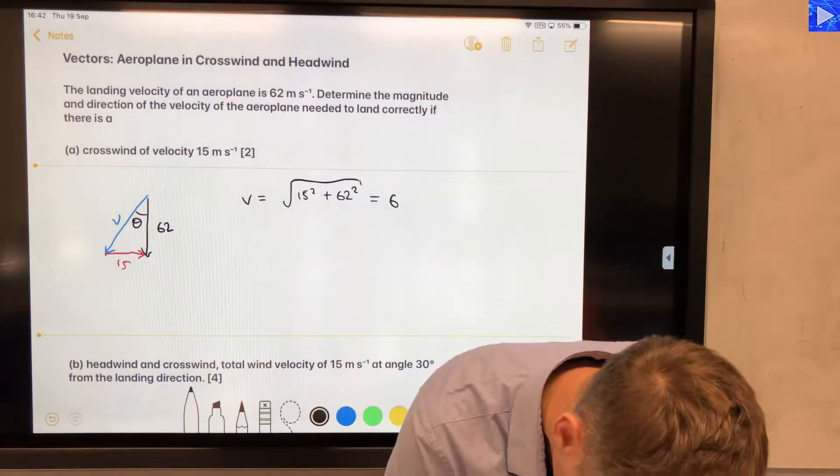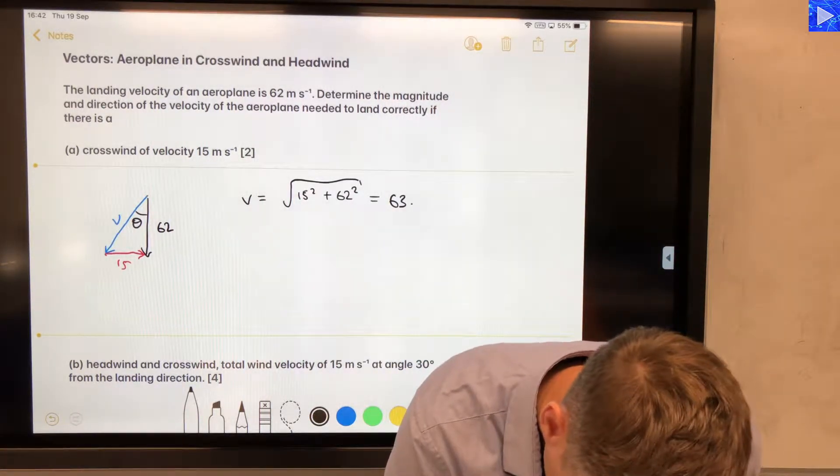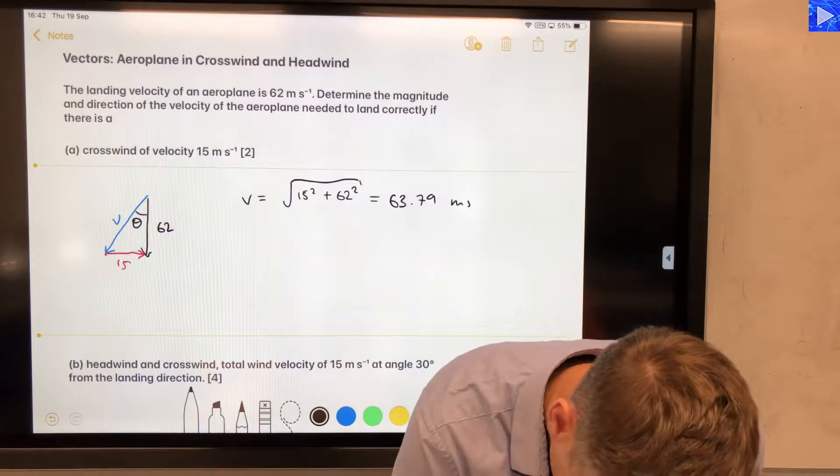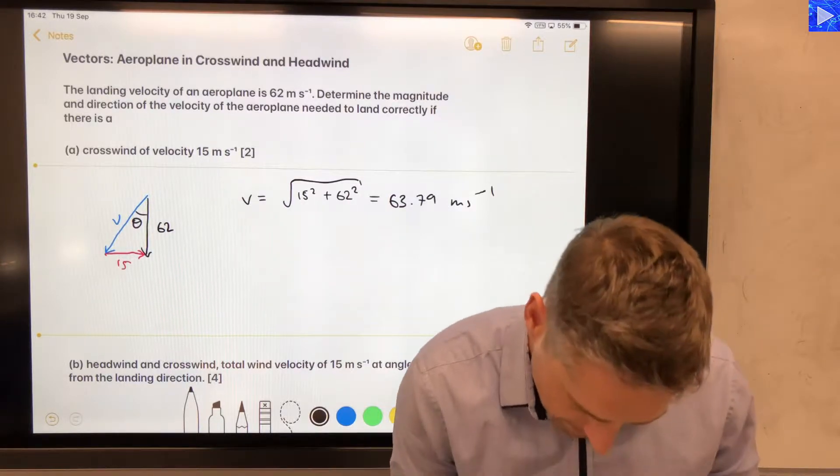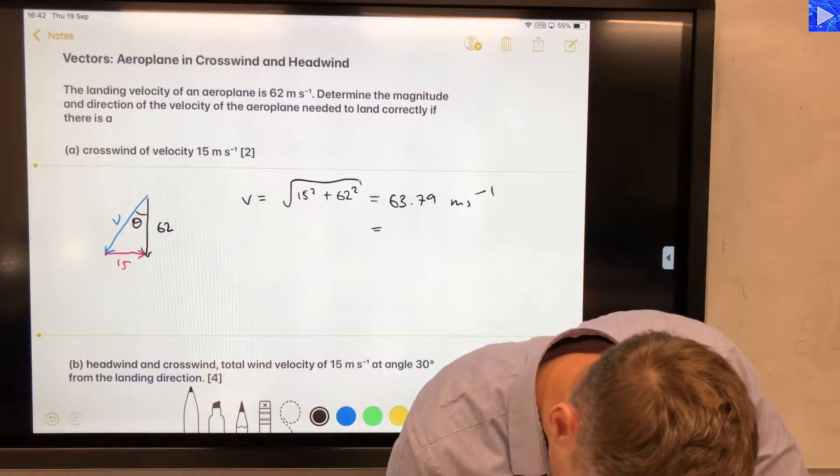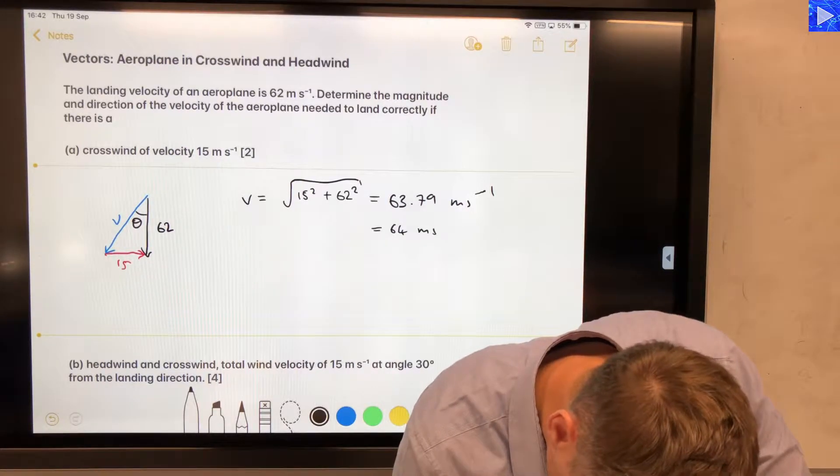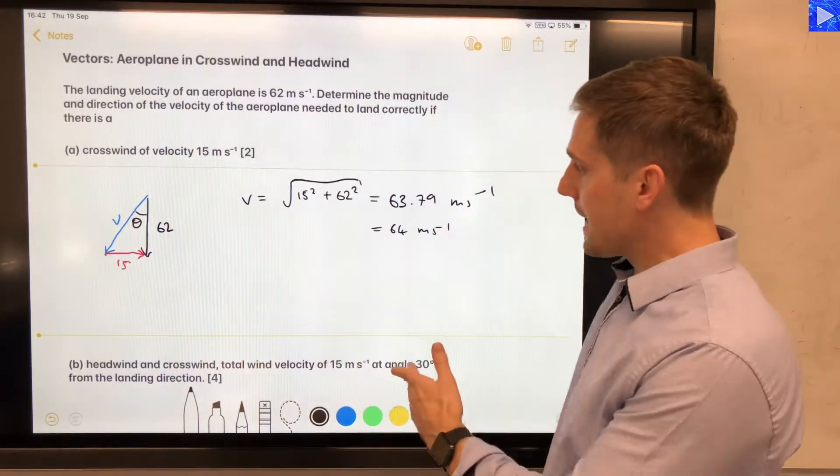That gives us 63.79 meters per second, so we can round that to 64, can't we? 64 meters per second to 2 significant figures.